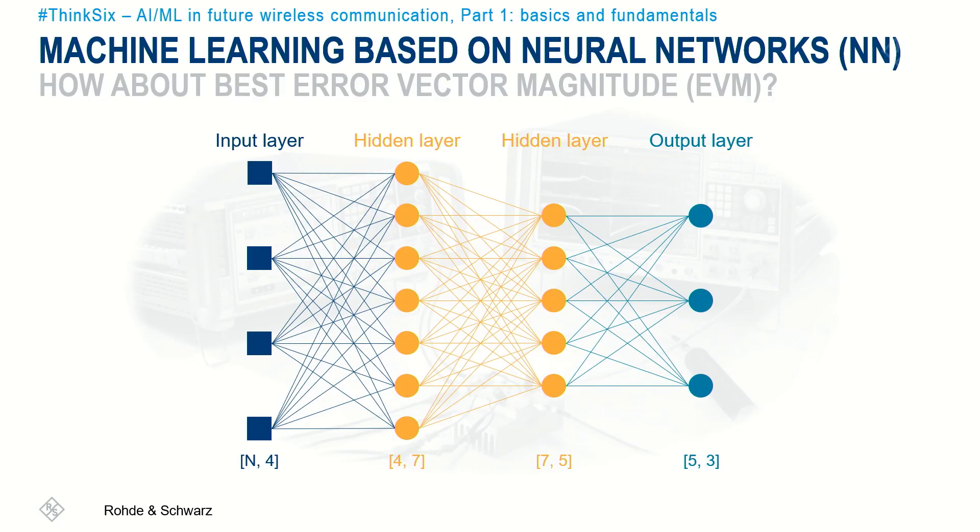Let's put this into context from a test and measurement perspective. Consider finding the settings on instruments like a signal generator and a spectrum analyzer to measure the best error vector magnitude (EVM) for any given signal. This is a typical method for customers to determine test equipment performance by measuring baseline EVM, connecting the signal generator directly to the spectrum analyzer, and recording EVM values while doing a power sweep from, say, minus 50 dBm to plus 10 dBm. If we plot those results, they typically form a bathtub curve: for lower power values the system is noise-limited, and for higher power values the system is driven into compression.